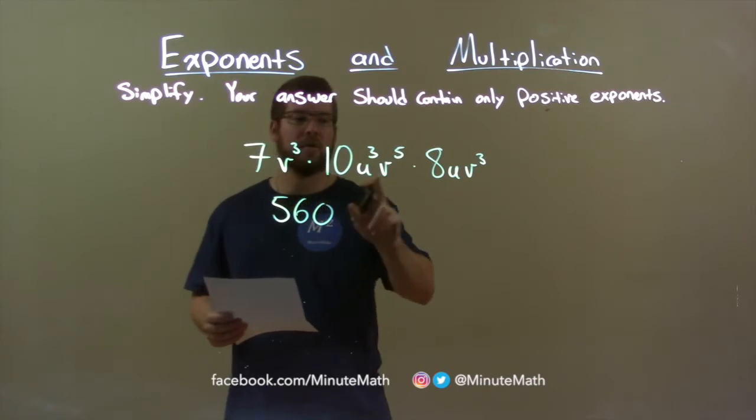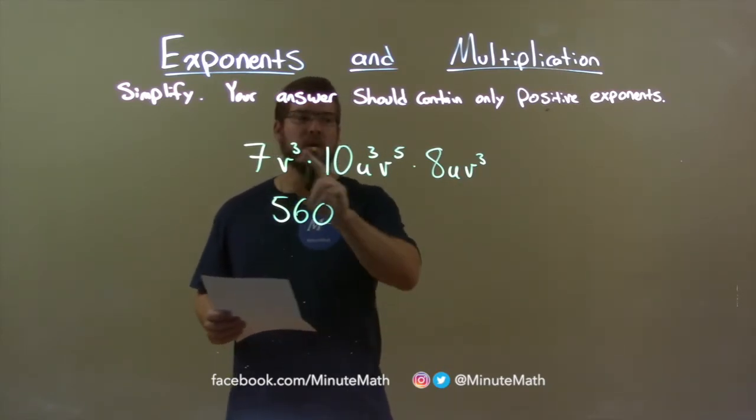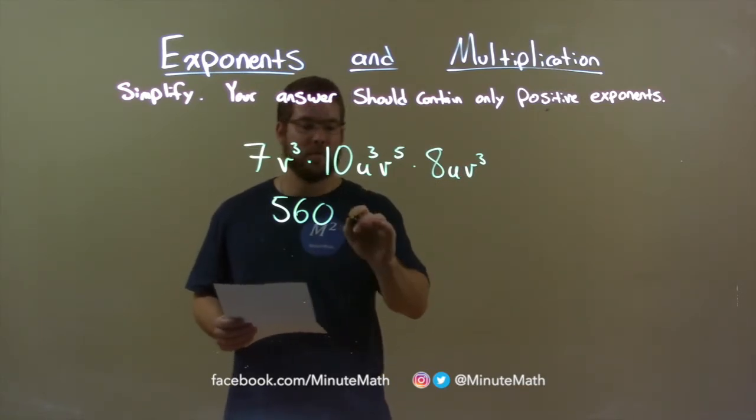So we have v to the third power, v to the fifth power, and v to the third power. 3 plus 3 is 6, plus 5 is 11. So we have v here to the eleventh power.